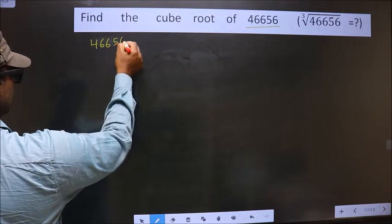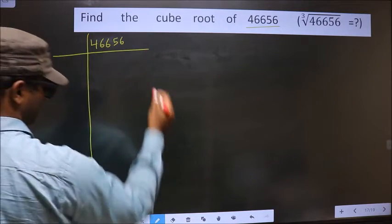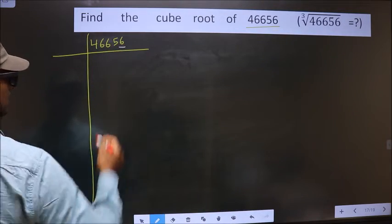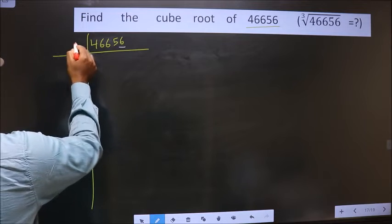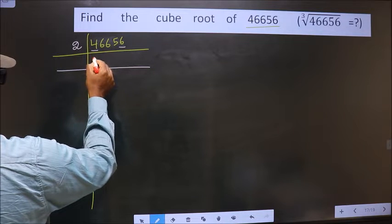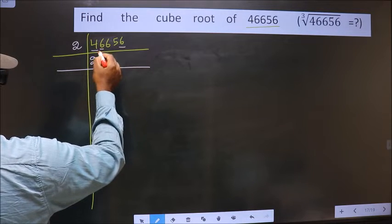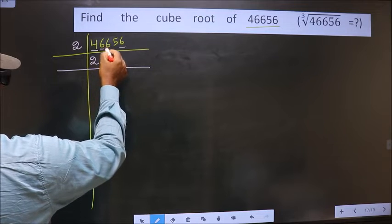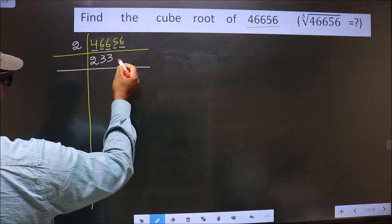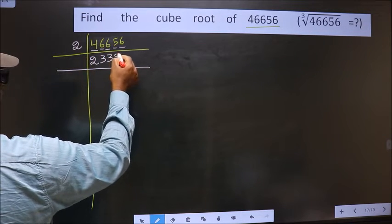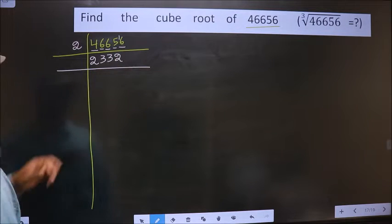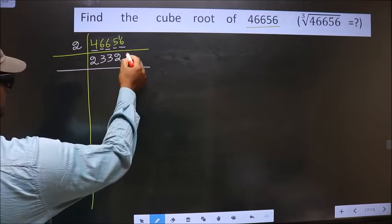Starting with 46656: the last digit is 6, which is even, so we take 2. First digit is 4 — in the 2 table, 2×2 is 4. Next digit is 6 — 2×3 is 6. Next digit is 6 — 2×3 is 6. Next digit is 5: closest in the 2 table is 2×2=4; 5 minus 4 is 1, carried forward making it 16. 2×8 is 16.